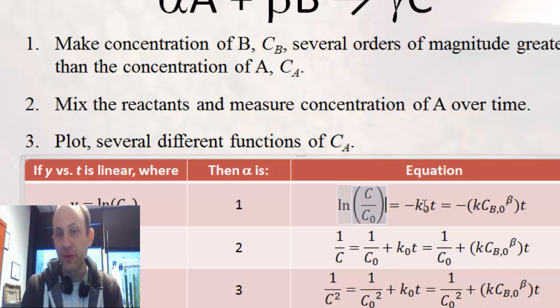So, this is the equation that governs it. If I plot log of the concentration, it doesn't matter, but this is just the initial concentration of A, then it should equal negative K naught times time. Where K naught is the pseudo first order rate constant, which is equal to the true rate constant, which we want, times the initial concentration of B raised to the beta power, which in this case is one.